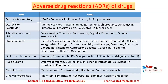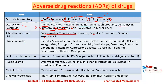For auditory ototoxicity, relevant drugs include NSAIDs, vancomycin, ethacrynic acid (a classical one), and aminoglycosides. Aminoglycosides cause both nephrotoxicity and vestibular ototoxicity. Quinidine and quinine also cause ototoxicity, along with vancomycin and ethacrynic acid. Specifically for vestibular ototoxicity, it is classically associated with furosemide.